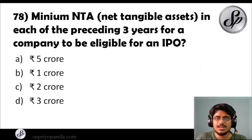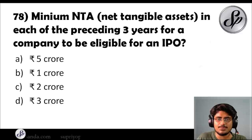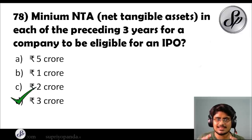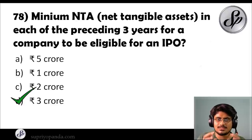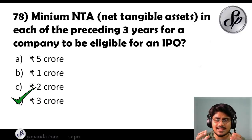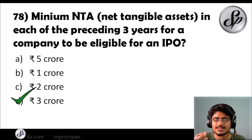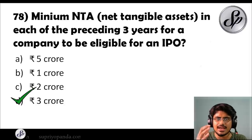Question seventy-eight: what is the minimum NTA — net tangible assets — in each of the preceding three years for a company to be eligible for an IPO? The answer is 3 crores. The net tangible assets for each of the preceding three years must be at least 3 crores. Also note: not more than 50% of them can be in the form of monetary assets.